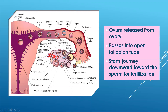That ovum will start moving down and implant into the uterus. If the implantation does not happen, then the woman is not pregnant. If implantation happens, then we have a growing fetus.